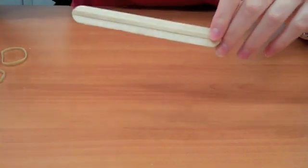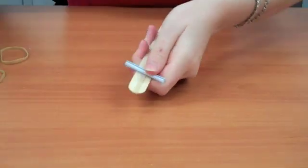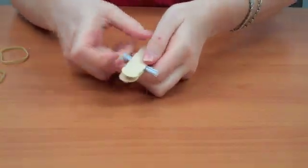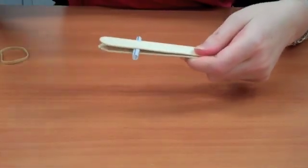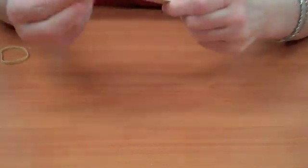After you've done that, you're going to take one side of your straw, and you're going to sandwich it between the two popsicle sticks like this. To hold it together, you're going to use one of your small rubber bands and tie the ends together.